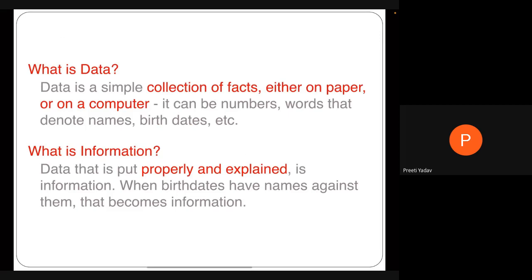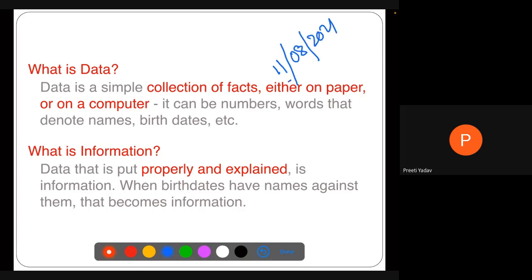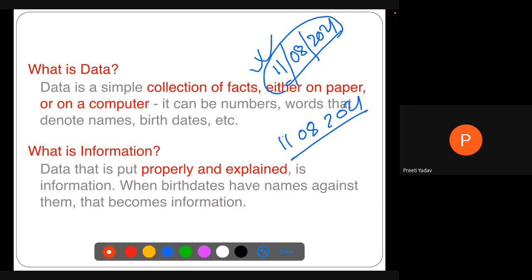Now let's review: data is basically a collection of facts on paper or in a computer. Information is when data is properly explained. For example, writing '11082021' alone is just data, but saying 'today is 11 August 2021' makes it information. There is a clear difference — data must be organized properly to extract information from it.